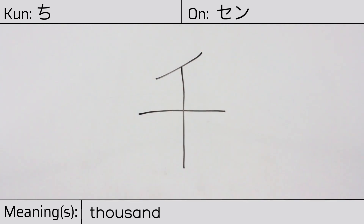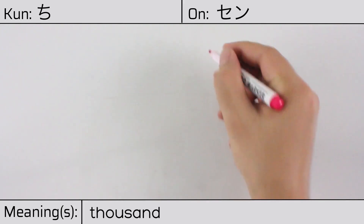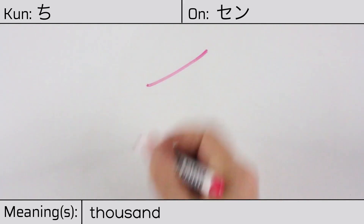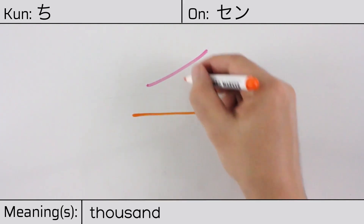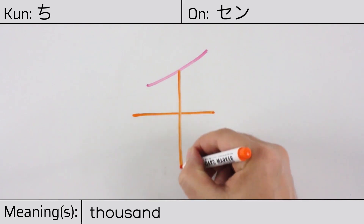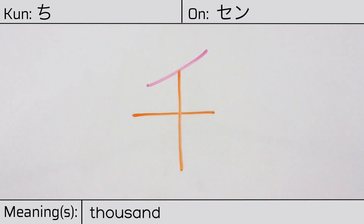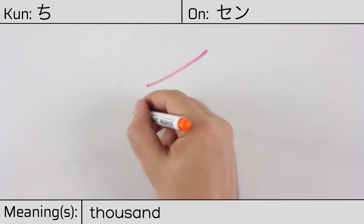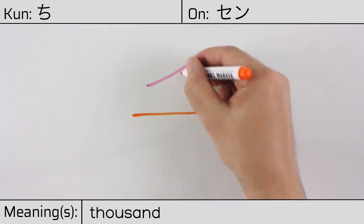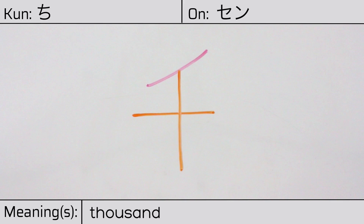This character is made up of the following radicals or parts: katakana no, then ten or complete, jiu. You can remember this kanji by the following hint: the many ancestors in heaven.